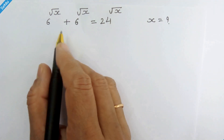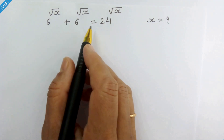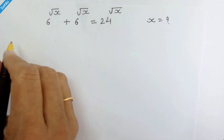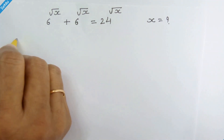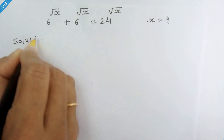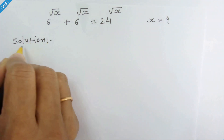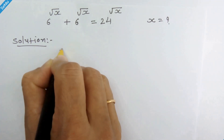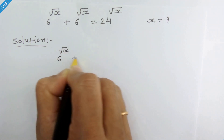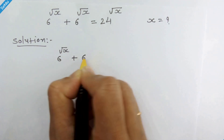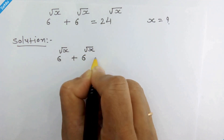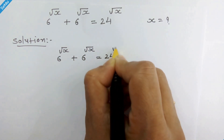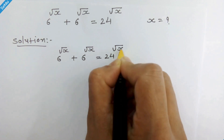Hello friends, this is our question and we have to find the value of x. So let's start. Our question is 6 raised to square root of x plus 6 raised to square root of x is equal to 24 raised to square root of x.